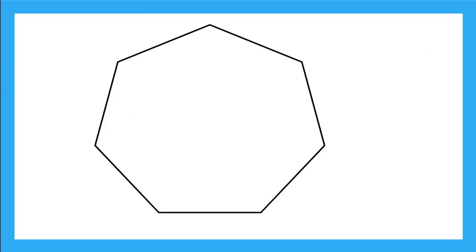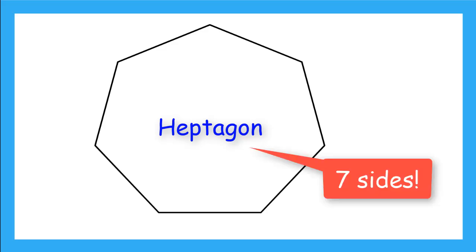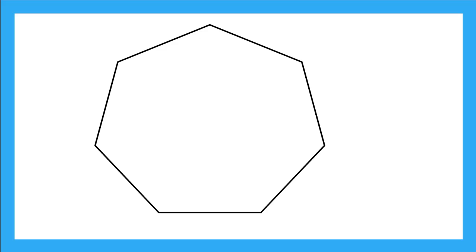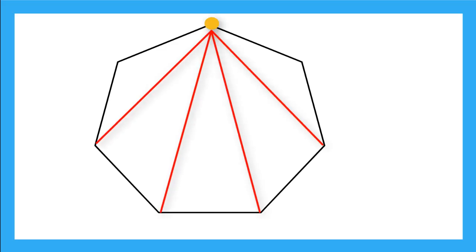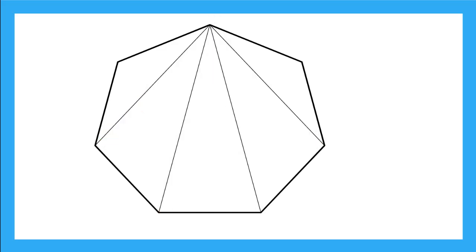Let's try another one. Here I have a heptagon. How many sides? Seven. Now let's draw some diagonals from my top vertex. Now do you see some triangles again? How many?